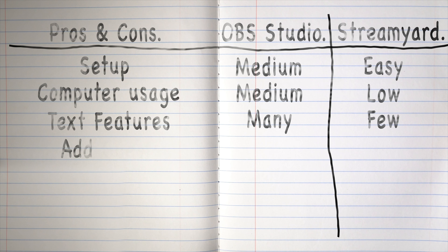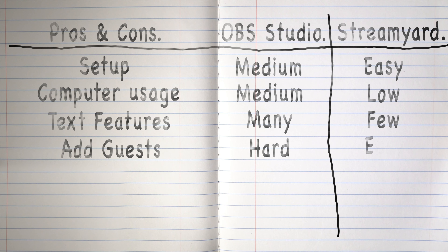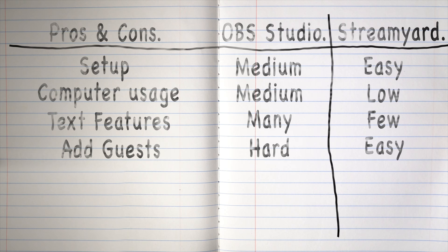How easy is it to add a guest? With OBS Studio, it can be pretty challenging to add a guest — a lot of that has to do with how many options you have, and it's going to take some time and testing to get it right. With StreamYard, it's as easy as sharing a link with the guest you want to add, and within a couple of minutes they're connected to you and live on the stream. It's so easy.